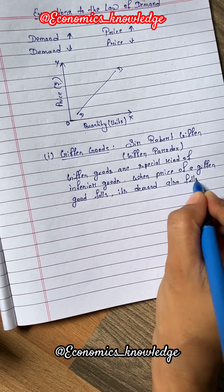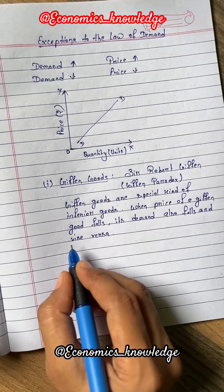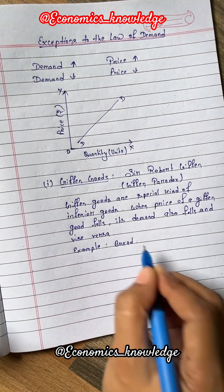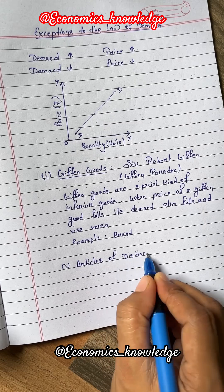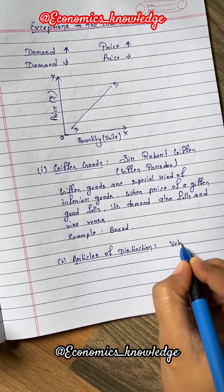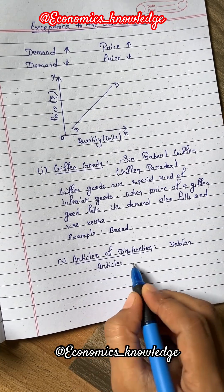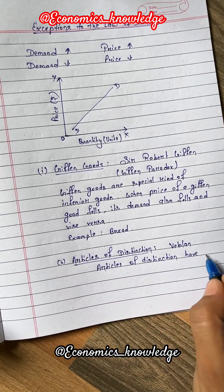For example, Bread. During the early 19th century, Sir Robert Giffen observed that when the price of bread increased, the low-paid British workers purchased more bread and not less of it, and this is contrary to the Law of Demand.